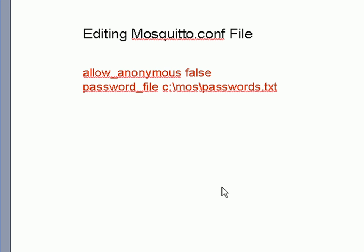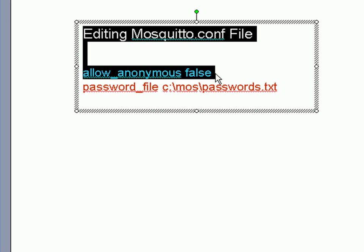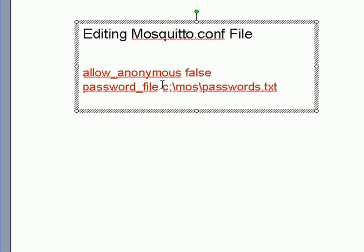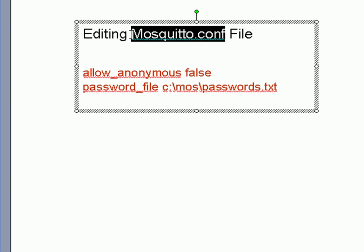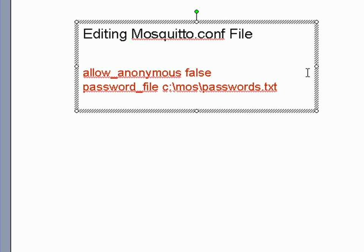Now we need to edit the mosquitto.conf file, and we only need two entries: one is 'allow_anonymous false', which tells it to use the password file, and then we specify where the password file is. I'll show this configuration on both Windows and Linux. In the examples I won't be using the main mosquitto.conf file — that's for production. For testing I'm using my own configuration file called password.conf.